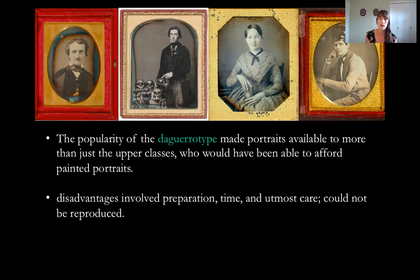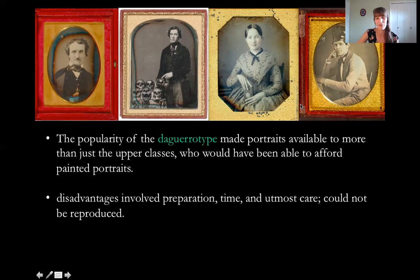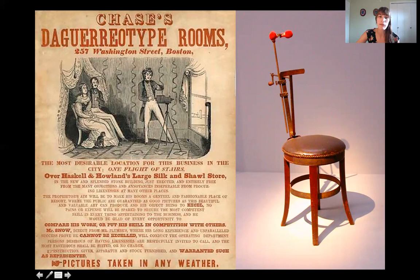The popularity of daguerreotypes made portraits available to more than just the upper classes. Prior to this, having a painted likeness of a family member was really expensive. With daguerreotypes, even people without much money could go somewhere to have one produced. The disadvantages of early daguerreotypes include long preparation time, utmost care required, and the fact that they cannot be reproduced — you make one and that's it. You might recognize Edgar Allan Poe here as one such subject.